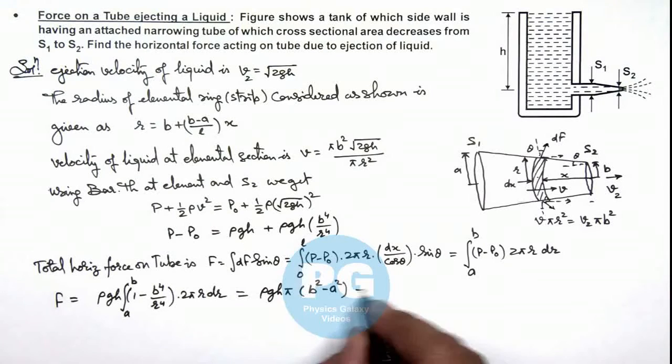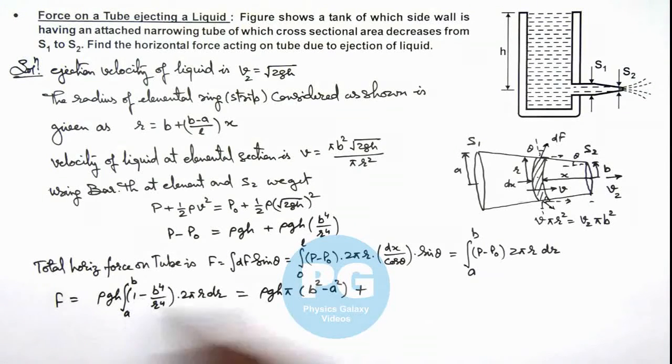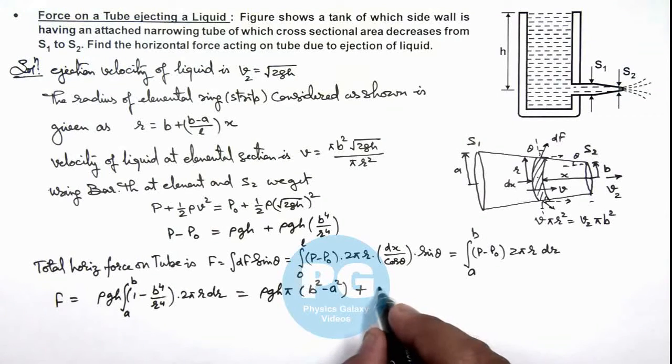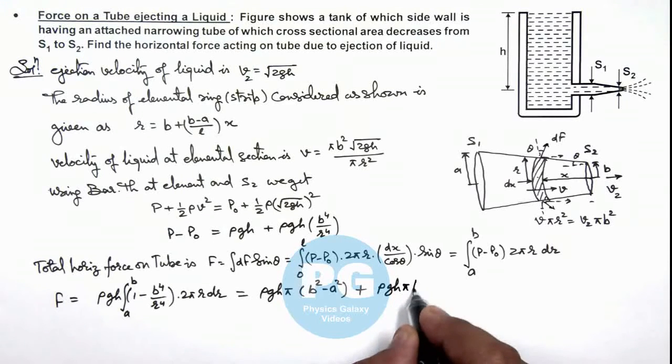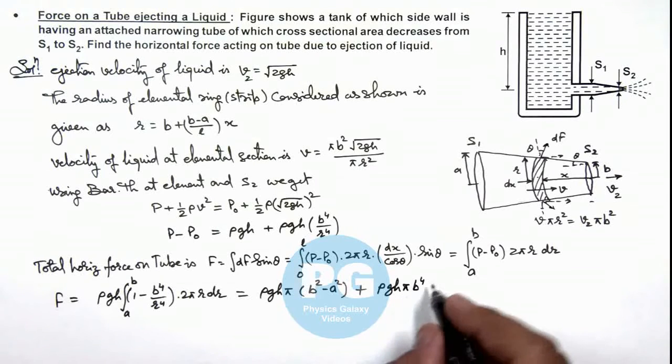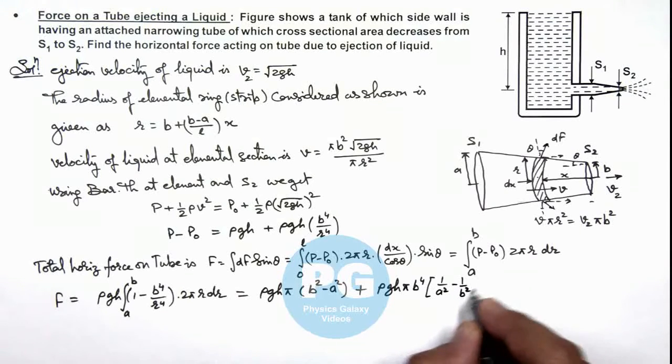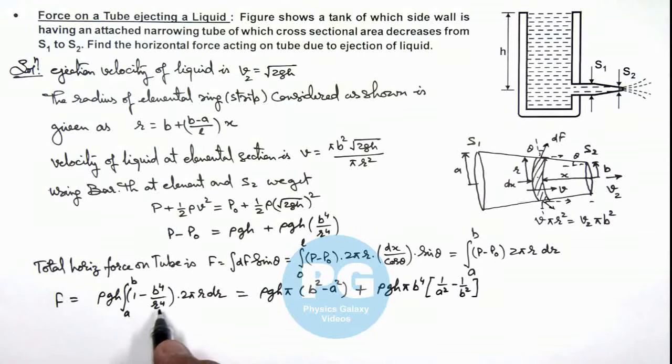And the next term we are getting is b⁴, when we integrate this r⁻³, this is -1/(2r²). So this becomes plus. This can be given as ρgh·π·b⁴, and when we substitute the limits, this will be 1/a² minus 1/b². Because integration of 1/r³ will be -1/(2r²), the minus will be changing the sign to plus, and substituting the limits from a to b gives us this value.